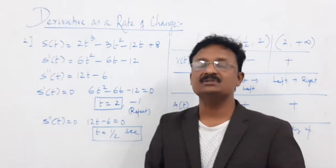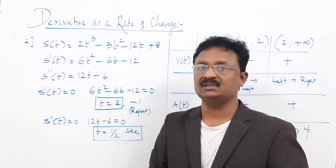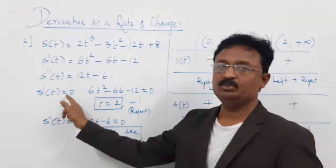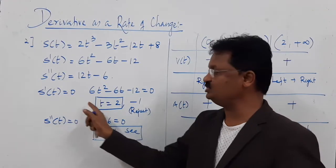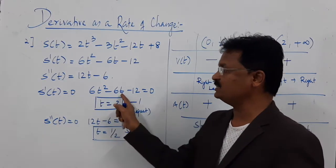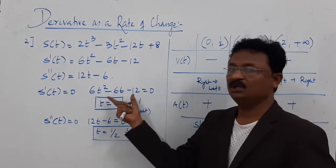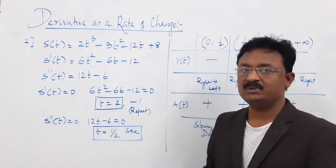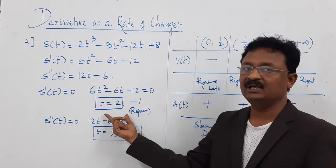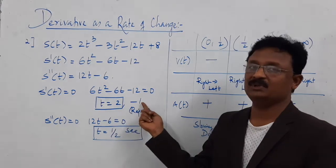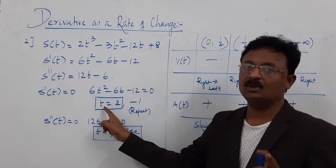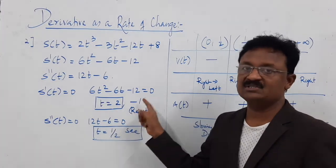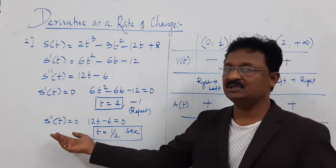Now set s dash of t equal to 0 to find the intervals of movement. Solving 6t² − 6t − 12 = 0 gives two values: t = 2 and t = −1. Since time is always positive, we consider t = 2 seconds. Then set acceleration equal to 0: 12t − 6 = 0, giving t = 0.5 seconds.